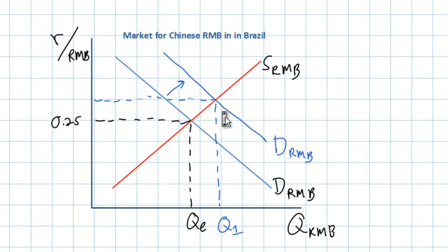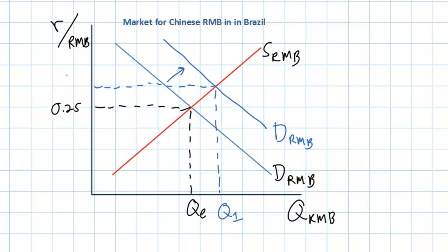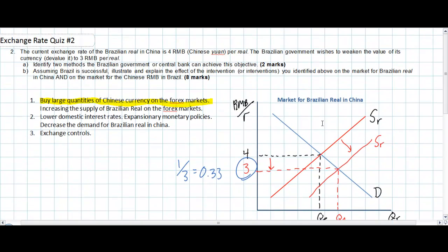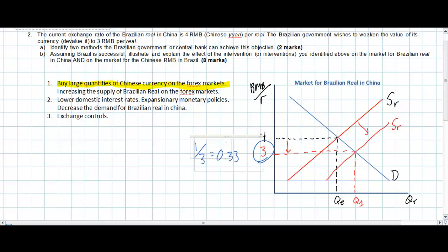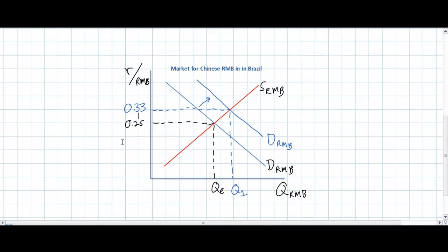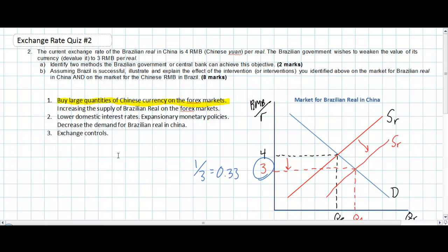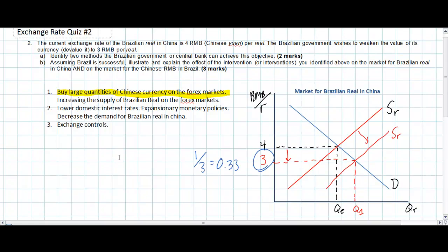We see that the increase in demand for Chinese RMB resulting from the Brazilian central bank's intervention causes the Chinese RMB to go up in value from 0.25 real per RMB to 0.33 real per RMB. The Brazilian central bank has successfully intervened in the forex market by increasing the supply of Brazilian real, causing it to depreciate, while the increase in demand for Chinese RMB has caused it to appreciate. The stronger RMB makes Chinese goods less attractive to Brazilian consumers, yet the weaker Brazilian real makes Brazilian goods more attractive to Chinese consumers and others around the world, increasing net exports, employment, and economic growth in Brazil.